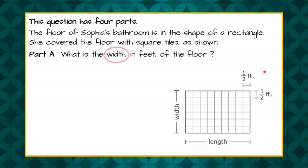Welcome back. So we are asked to find the width of this rectangular shape. And it's in feet and we can see that each square on our grid represents one half of a foot. So we need to count the number of squares that make up the width. So one, two, three, four, five, six.